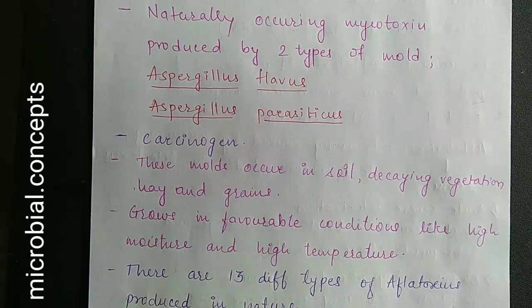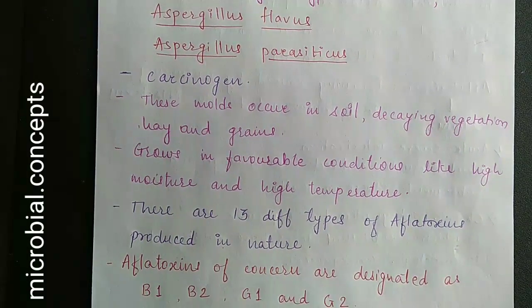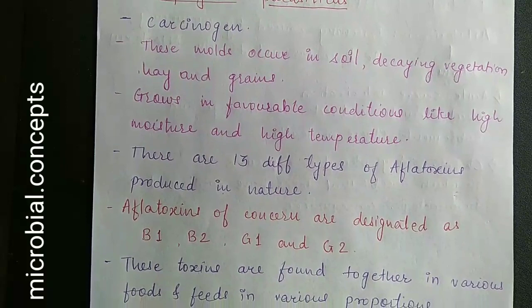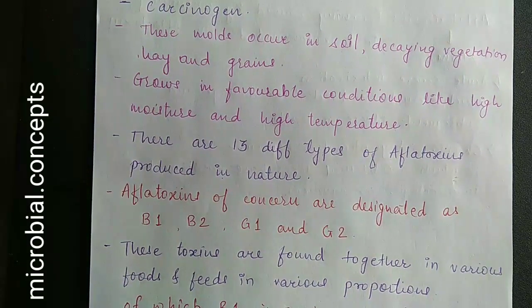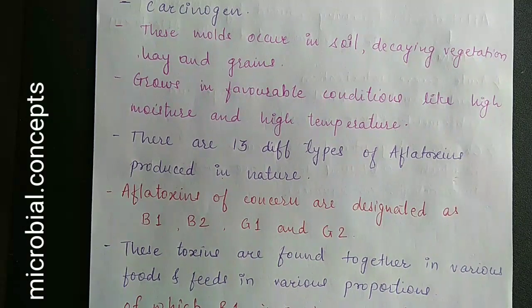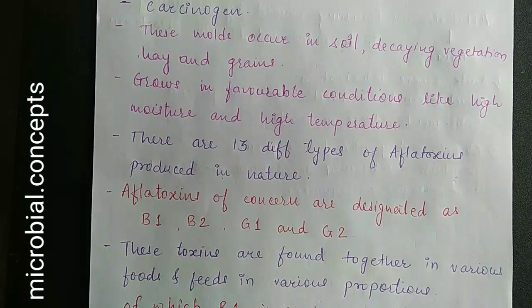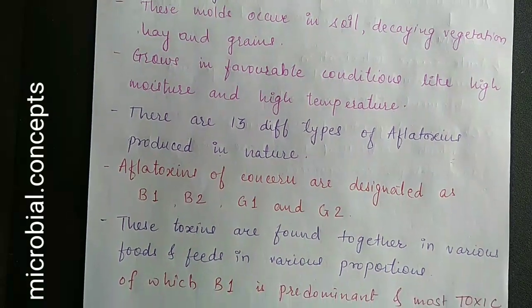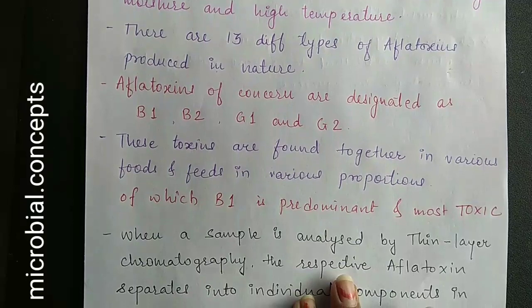Worldwide, the frequency of aflatoxin poisoning is more prevalent in South Africa. There are around 13 types of aflatoxins produced in nature. The aflatoxins of concern are designated as B1, B2, G1, and G2 — 'B' for blue fluorescence and 'G' for green fluorescence that they show under a UV torch.